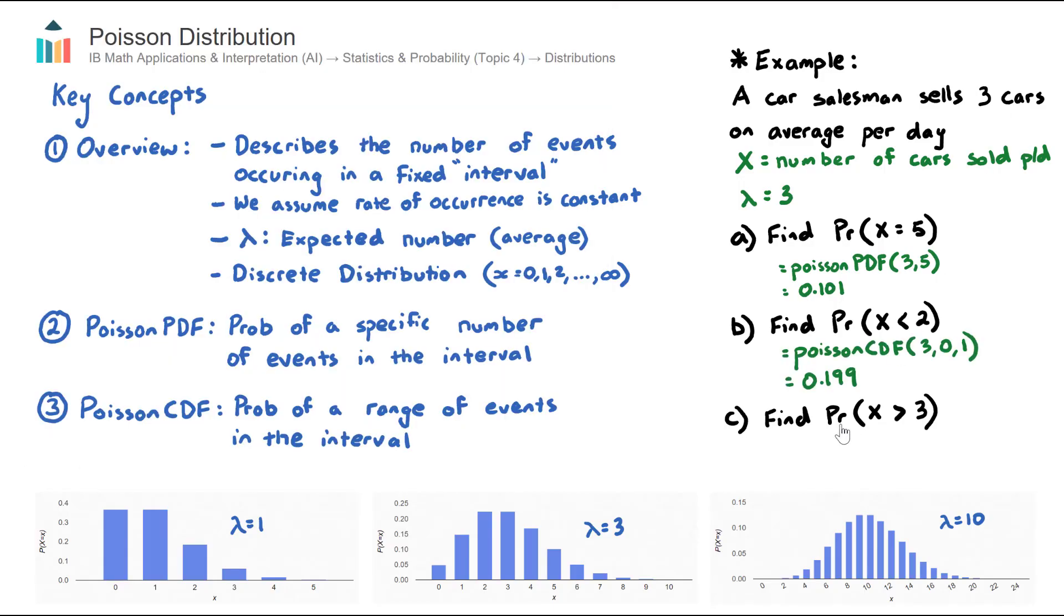Part C: what is the probability that this salesman sells more than three cars? Visualizing on our Poisson distribution graph with lambda of 3, that will be the combined heights of all the bars greater than 3, so this one here, the 4, 5, 6, 7, 8.